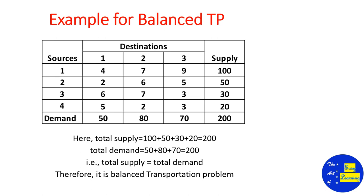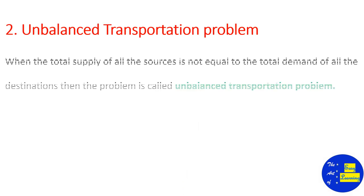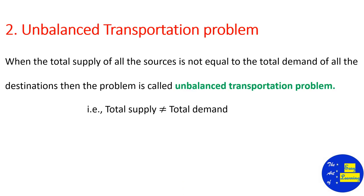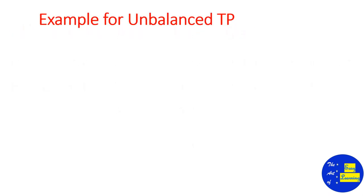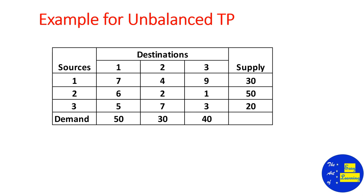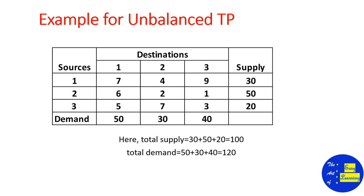An unbalanced transportation problem is one where total supply is not equal to total demand, i.e., summation ai ≠ summation bj. For example, with three sources and three destinations, if the total supply is 30 + 50 + 20 = 100 and total demand is 50 + 30 + 40 = 120, then total supply is not equal to total demand — so this is an unbalanced transportation problem.